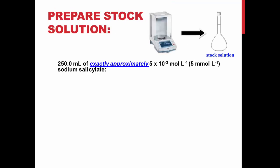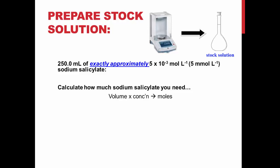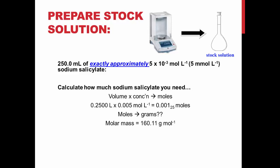To prepare your stock solution, you will need 250 mL of approximately 5 mM sodium salicylate, and you will need to calculate how much sodium salicylate is needed. First, convert volume into moles by multiplying by concentration — you will need 0.00125 moles. Then convert moles into grams by multiplying by molar mass. You will need 0.2 grams of sodium salicylate.